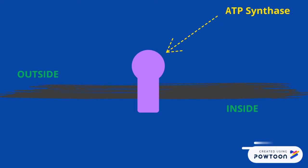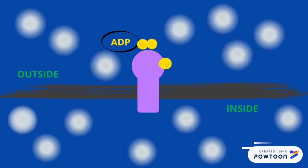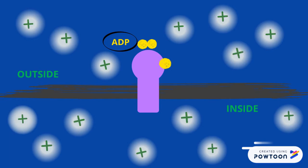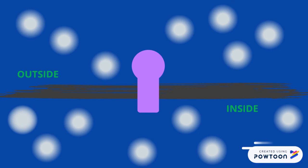While the protons rush to the other side, they spin the ATP synthase, which has a phosphate attached to it. As an ADP molecule comes along, it attaches the phosphate to it, creating ATP, which your body can now use for energy.